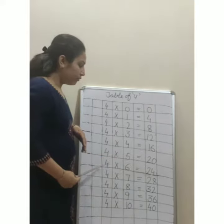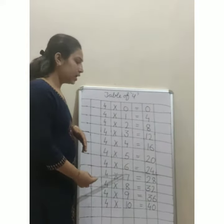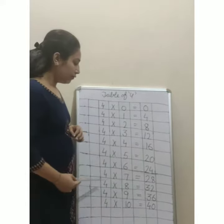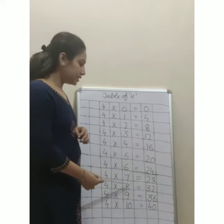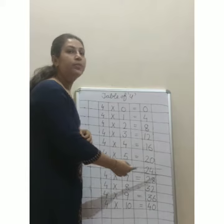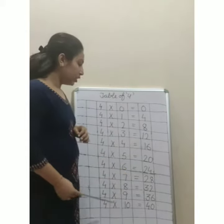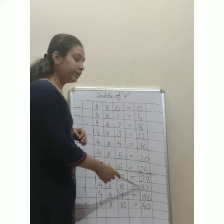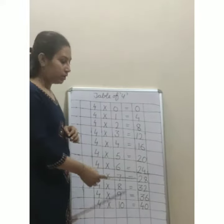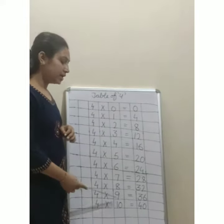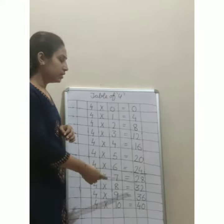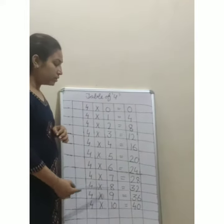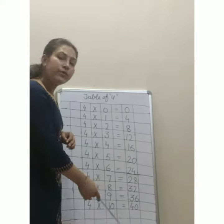4 sixes are 24, 4 sevens are 28, 4 eights are 32, 4 nines are 36, 4 tens are 40.